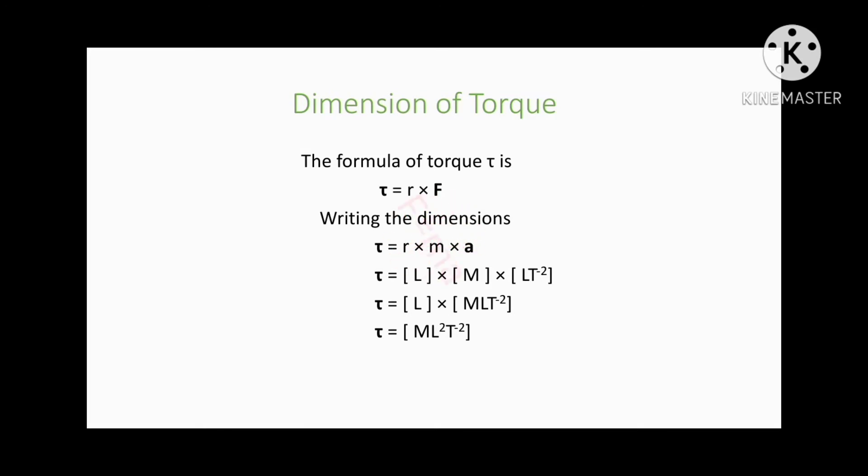In the next step, we shall write the dimensions. The dimension of the moment arm is [L] because moment arm and length are the same thing. The dimension of the mass is [M] and dimension of the acceleration is [L][T⁻²]. It is because the SI unit of acceleration is m·s⁻² in...